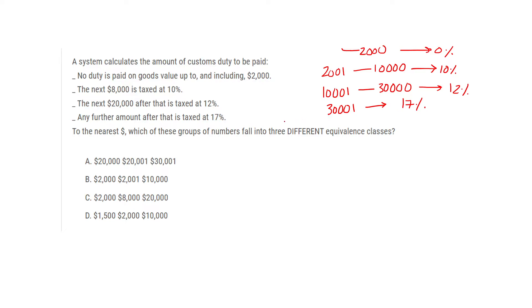He is asking which group of numbers falls into three different equivalence classes. Option A: 20,000 is in the third class and 20,001 is also the third class, and 30,000 is the fourth class — so here we get only two different classes. A is not the correct answer.